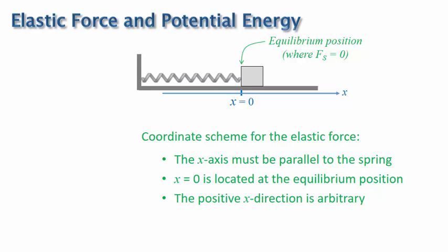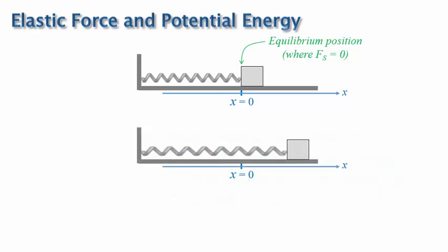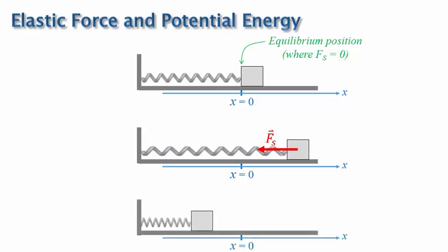Now let's consider what happens if we slide the block to the right so that the spring is extended like this. As you can imagine, the spring will pull the block back to the left, so the spring force on the block looks like this. Or if we slide the block to the left of the equilibrium position like this, then the spring will be compressed, and the spring force will push the block back to the right like this.